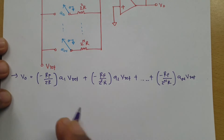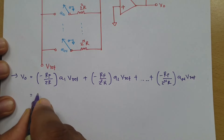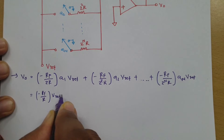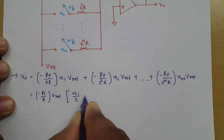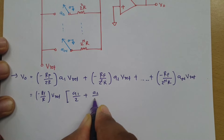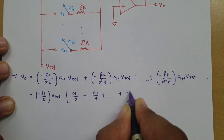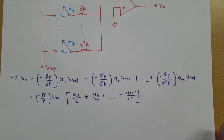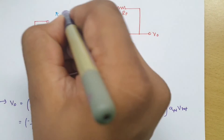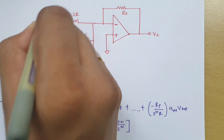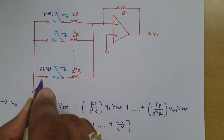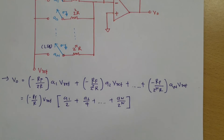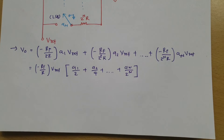Simplifying the output voltage equation by taking −RF/R × V_reference as common: V0 = −(RF/R) × V_reference × [A1/2 + A2/4 + ... + AN/2^n]. Here A1 corresponds to the MSB switch and AN corresponds to the LSB switch of the digital data.